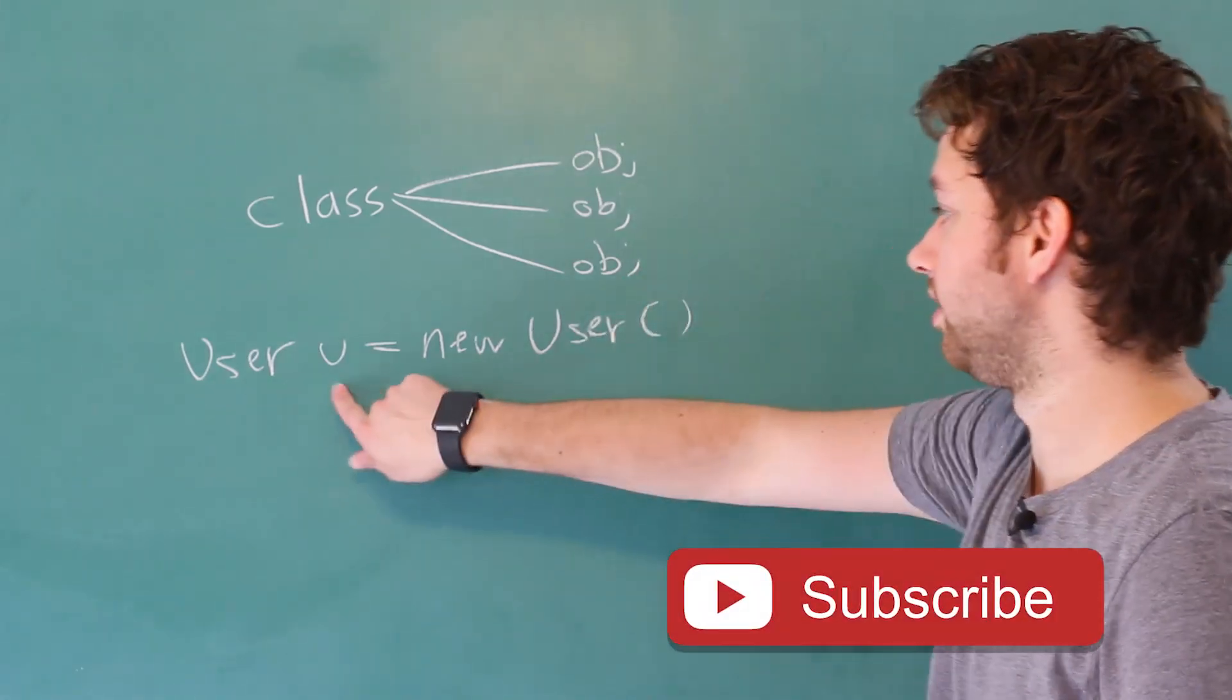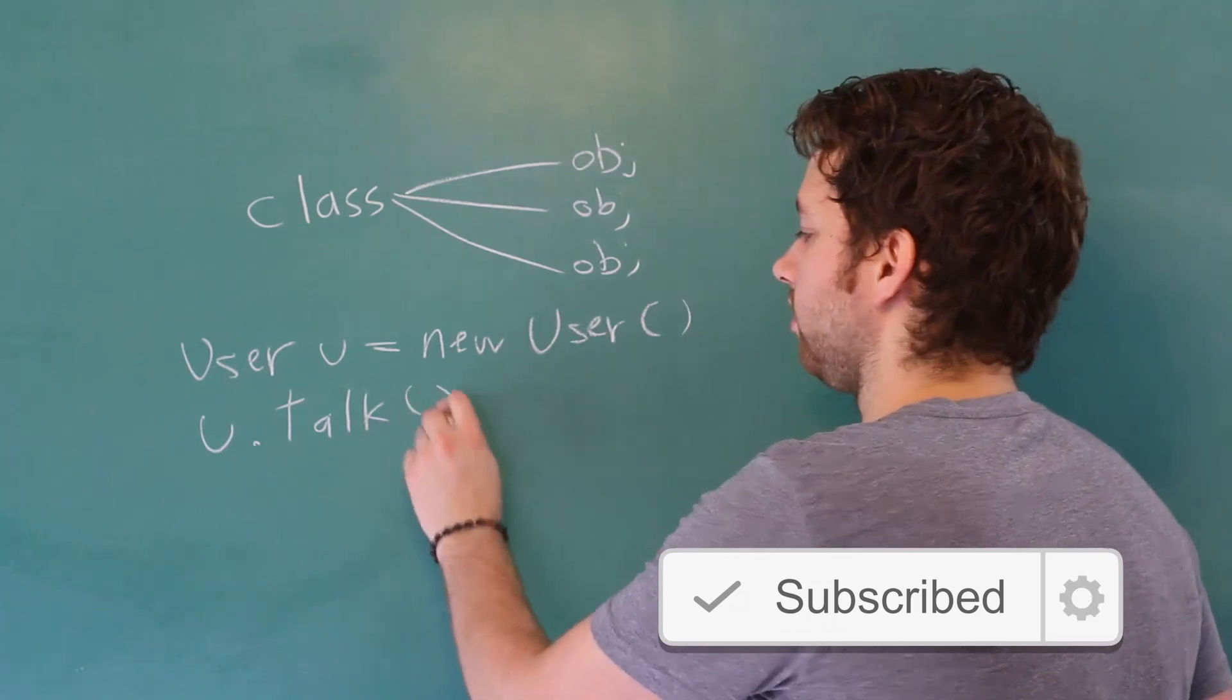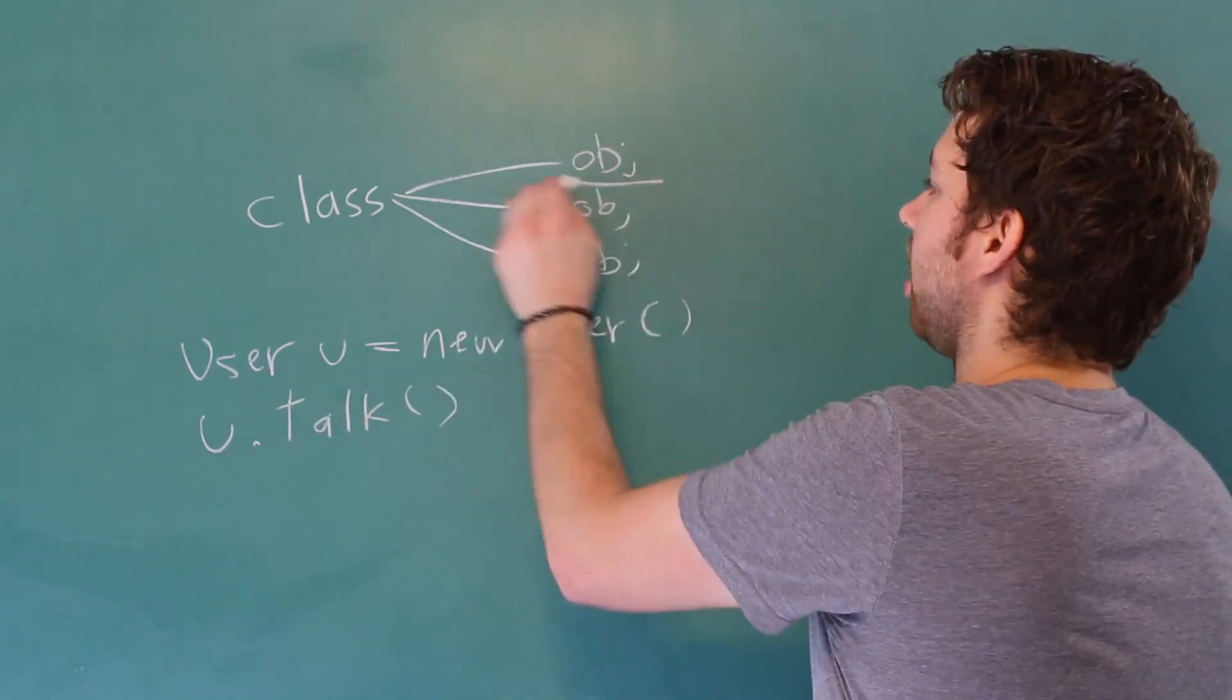You would do something like this. You would create an instance, call it u, and then you would say u.talk. It's on the instance, so one particular object.